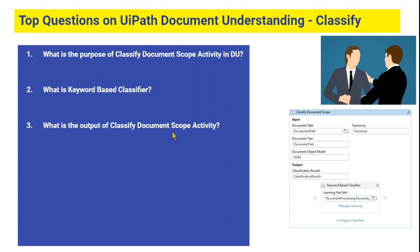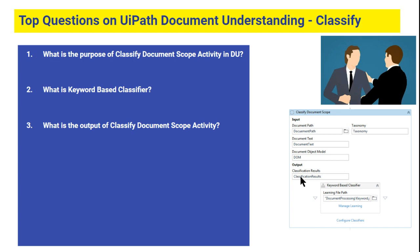The third question: what is the output of the Classify Document Scope activity? The output is called classification results. Classification results contain all the details — we create a JSON file inside the keyword-based classifier that stores the document type ID and the keywords we have created. This output tells you whether the scanned document was an invoice, a receipt, or another document type.